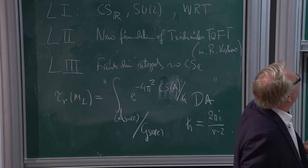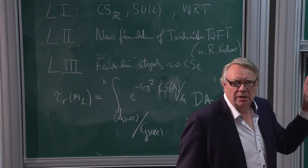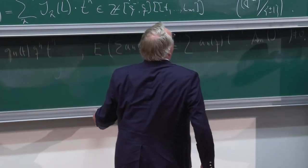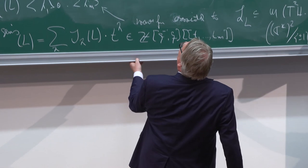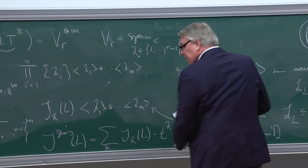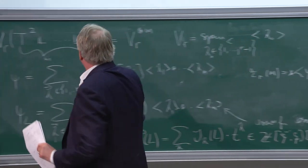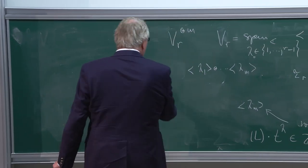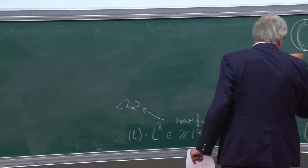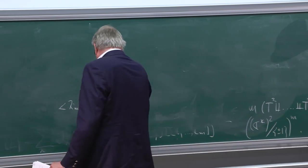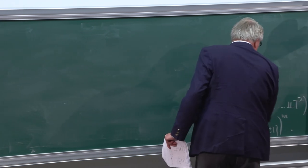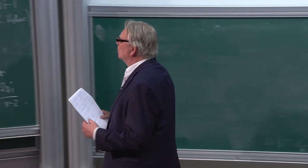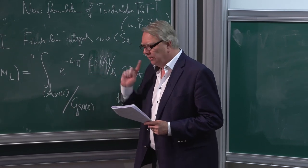Therefore, what's missing now is for me to give you the colored Jones polynomials, and then you have the invariant exactly. In order to give the colored Jones polynomials, I have to introduce certain vector spaces — these are really representations of the quantum group at this root of unity. R is the size of the root of unity, which equals k plus the dual Coxeter number, and Chern-Simons is well-defined up to an integer, giving exactly this.